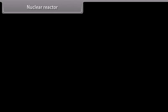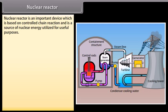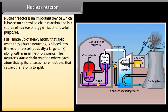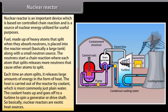Nuclear reactor: Nuclear reactor is an important device which is based on controlled chain reaction and is a source of nuclear energy utilized for useful purposes. Fuel made up of heavy atoms that split when they absorb neutrons is placed into the reactor vessel, basically a large tank, along with a small neutron source. The neutrons start a chain reaction where each atom that splits releases more neutrons that cause other atoms to split. Each time an atom splits, it releases large amount of energy in the form of heat. The heat is carried out of the reactor by coolant, which is most commonly just plain water. The coolant heats up.